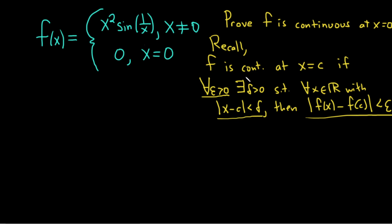then this condition has to be satisfied. The absolute value of x minus c is the distance between x and c, so we're saying here that it's small. So whenever this distance is less than delta, the distance between f of x and f of c is also small. How small? As small as you like, because it holds for all epsilon.